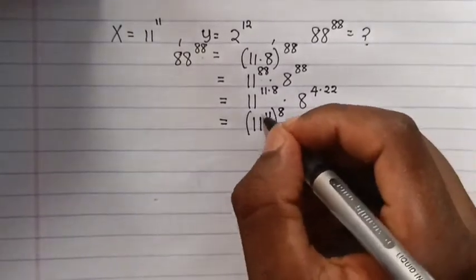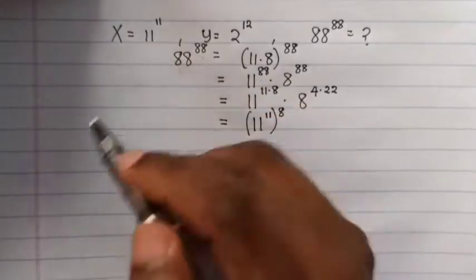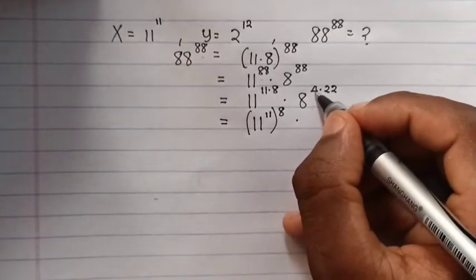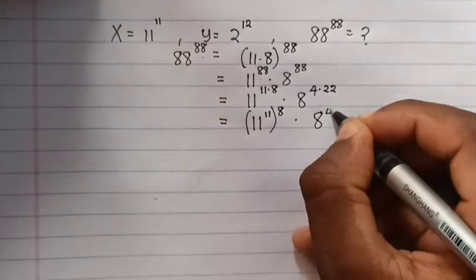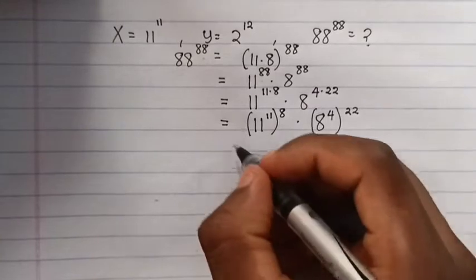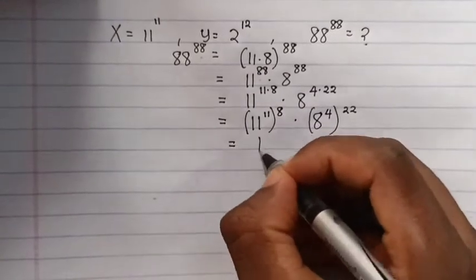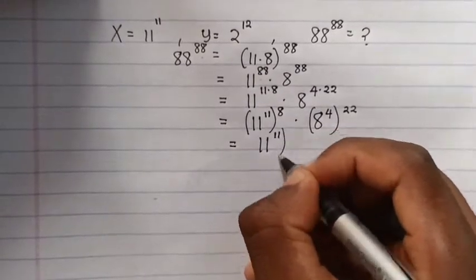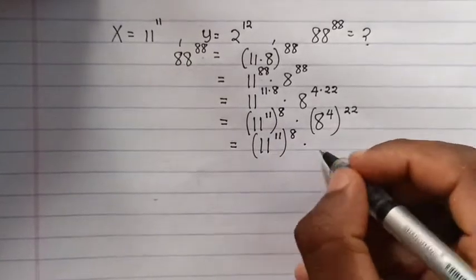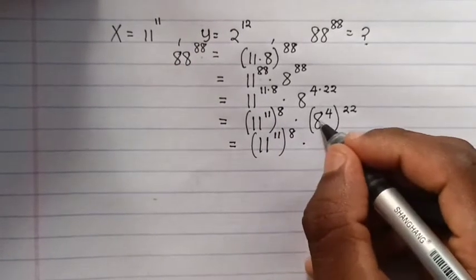We simplify this to 11 to the power of 88 times 8 to the power of 4 times 22. Then this one, 8 to the power of 88, we put it inside the bracket to the power of 22.